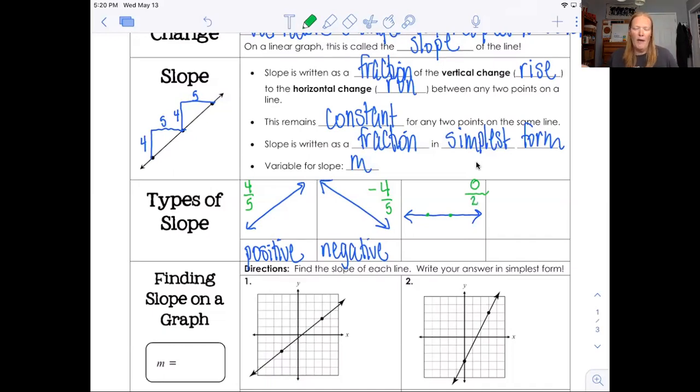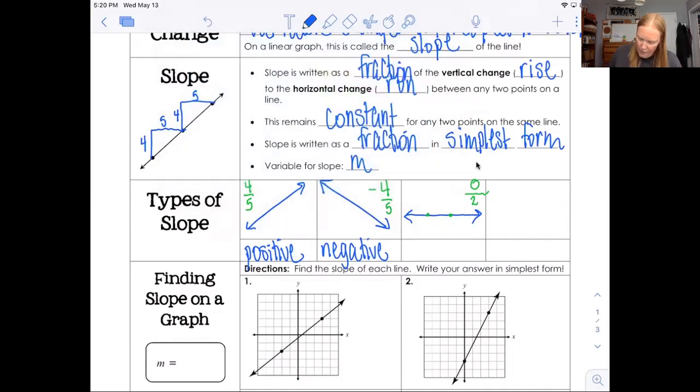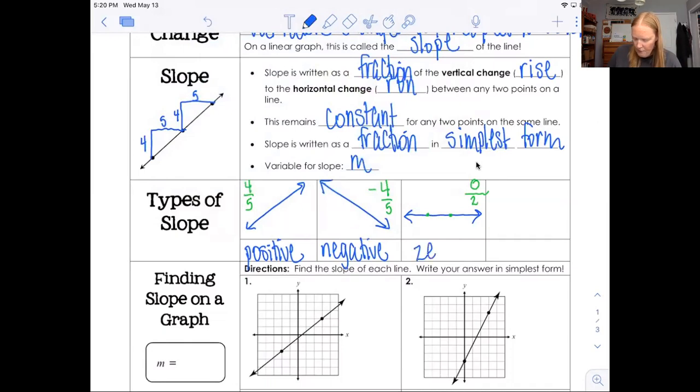The run between these two points right here could be 2. Maybe it's 10. Maybe it's 5. It doesn't matter what the run is as long as you know that the rise is 0. So let's just put a 0 over 2. In math, 0 divided by anything is 0. So we call this a 0 slope. Another name that sometimes people give it is no slope.